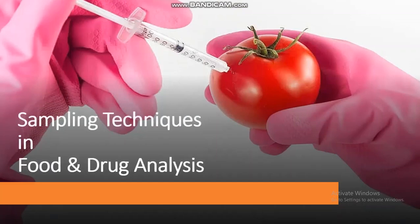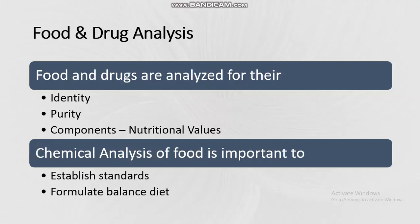In this video we will discuss different sampling techniques in food and drug analysis. Food and drugs are analyzed for the identity, purity, and nutritional values of the food or drug. Chemical analysis of food is important to establish standards and formulate a balanced diet.